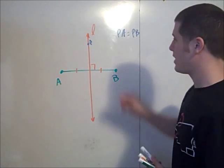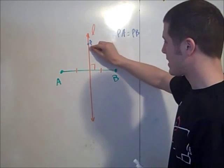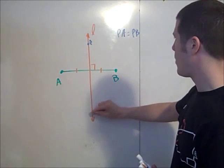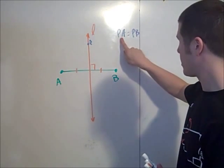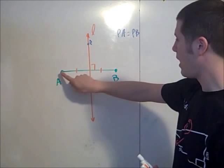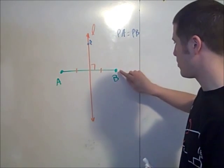So I can imagine that I can grab a hold of P and slide it up and down line L, and no matter what, this distance PA is always the same as this distance PB.